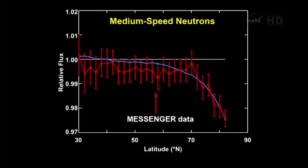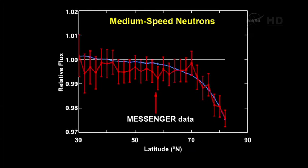Next slide, please. And so now what we've done is superimposed messenger neutron data on top of those two simulations. And what we see very clearly is that the data track extraordinarily nicely with the simulation that says we have enhanced hydrogen.